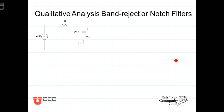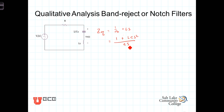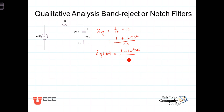To understand this, let's take a look at the series equivalent of those two impedances. Z_equivalent equals 1/(CS) + LS. Getting a common denominator, that's equal to (1 + LCS²) / (CS). Now replacing S with jω to see the explicit frequency dependency, we get Z_equivalent as a function of jω equal to (1 − ω²LC) / (jωC).